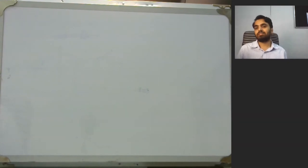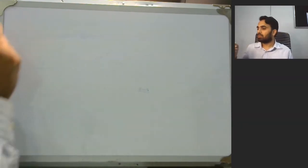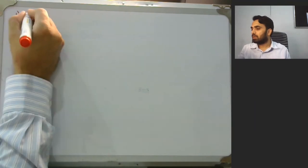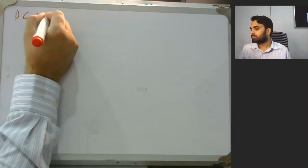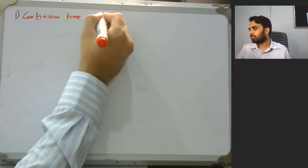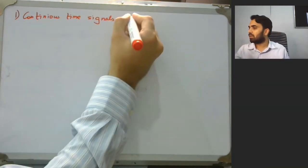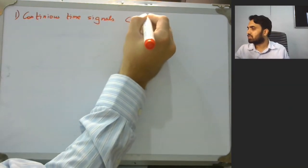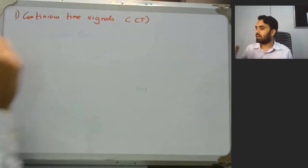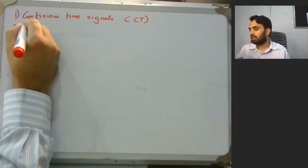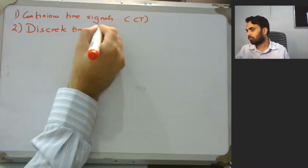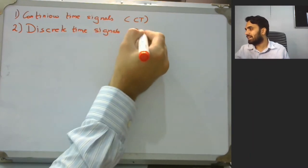Let us classify the signals into its respective kinds. Primarily we have continuous time signals (CT), and we can also have discrete time signals (DT).